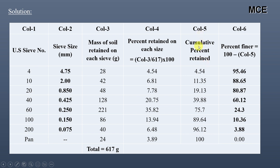The fifth column shows the cumulative percent retained on each sieve. For the first sieve it is 4.54, for the second sieve it is 4.54 plus 6.81 which is 11.35, for the third sieve it is 11.35 plus 7.78 which is 19.13, and for the last sieve or pan it will be 100%. The sixth column shows the percent finer, obtained by subtracting the cumulative percent retained from 100. For the first sieve it is 100 minus 4.54 equals 95.46, for the second sieve it is 100 minus 11.35 equals 88.65, and for the third sieve it is 100 minus 19.13 equals 80.87.